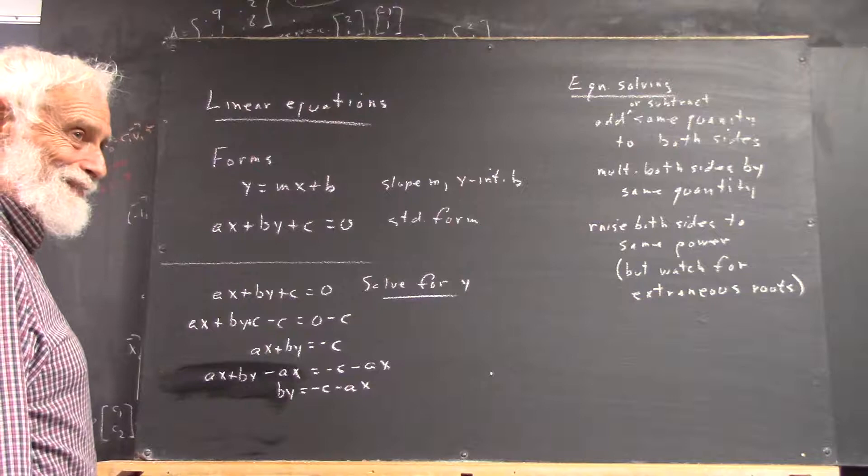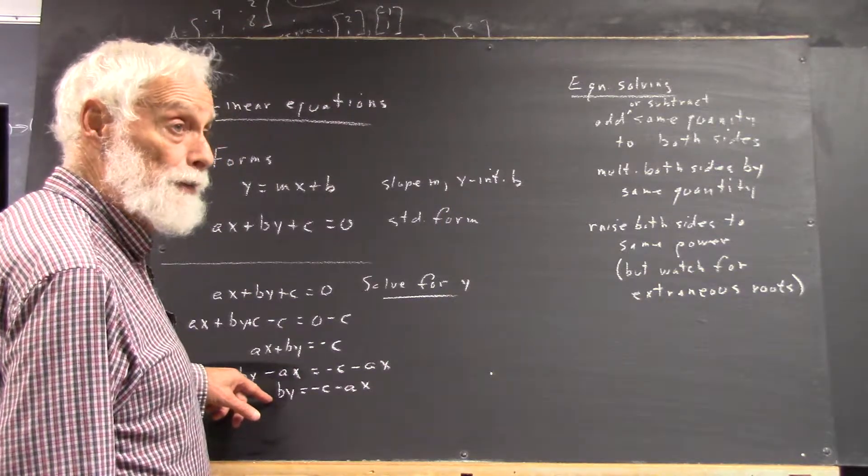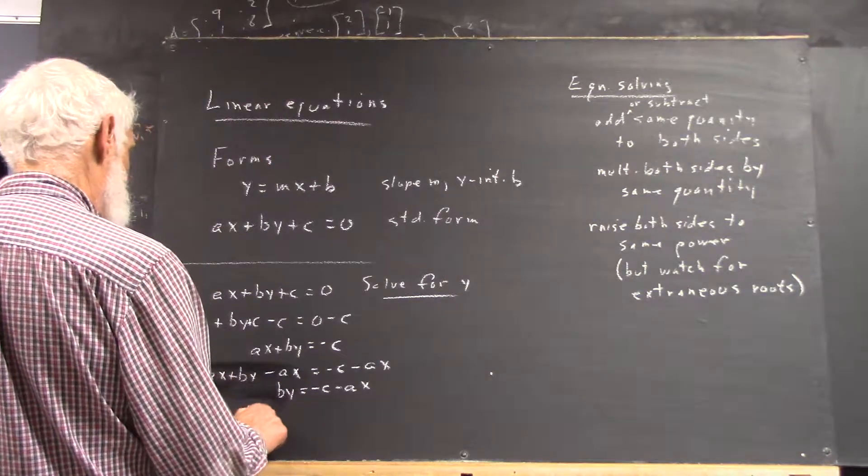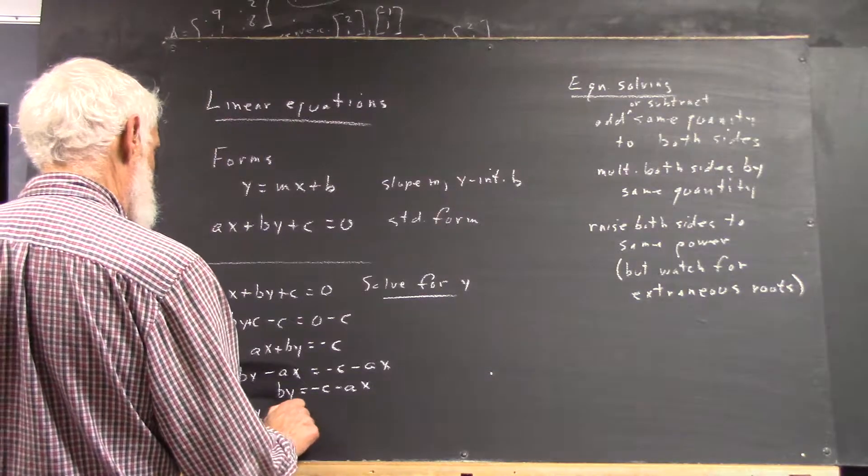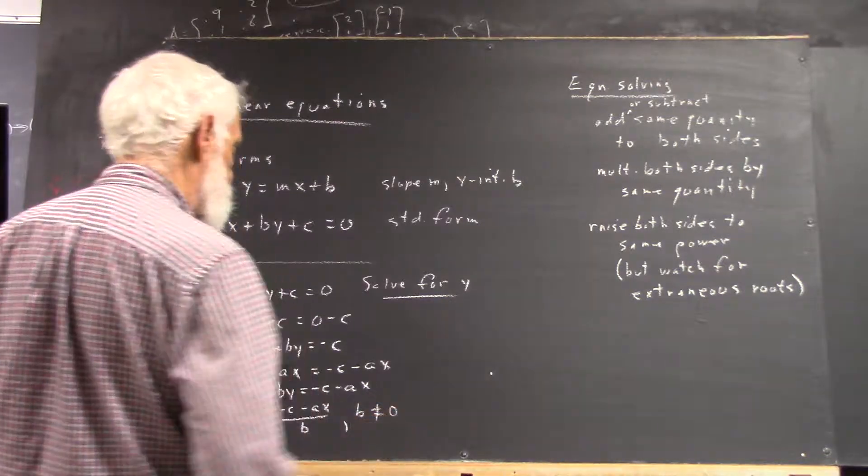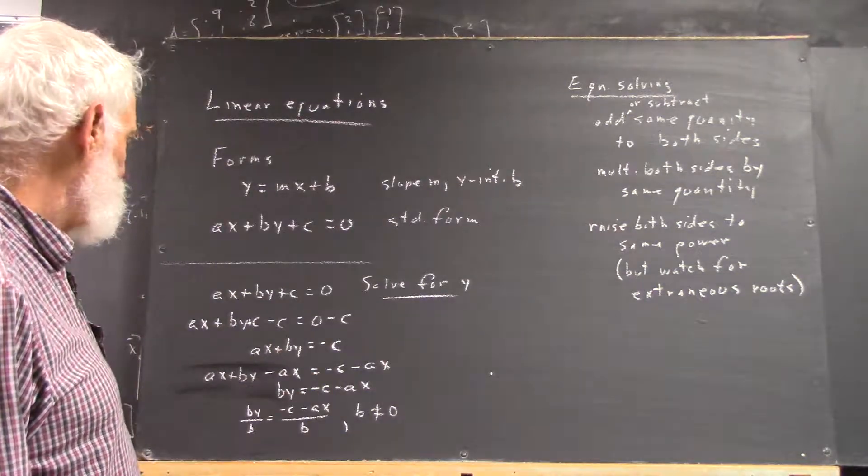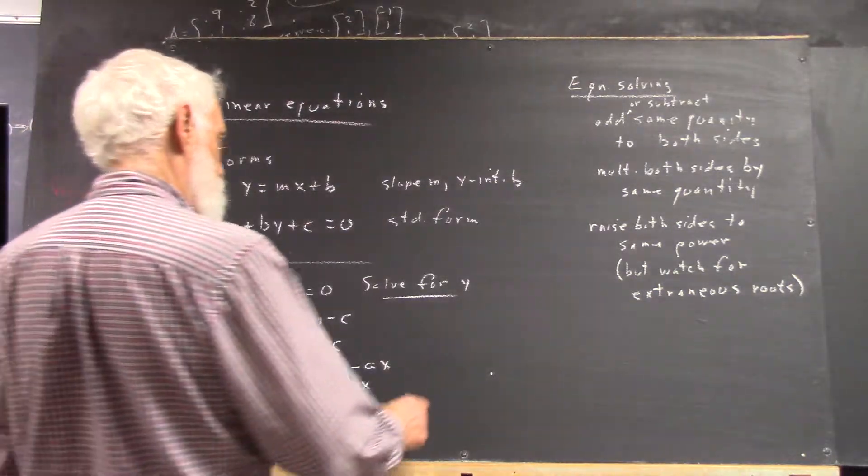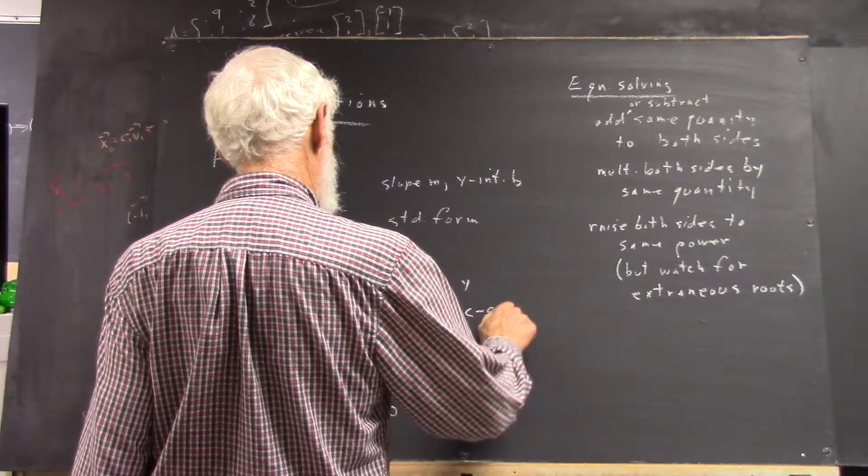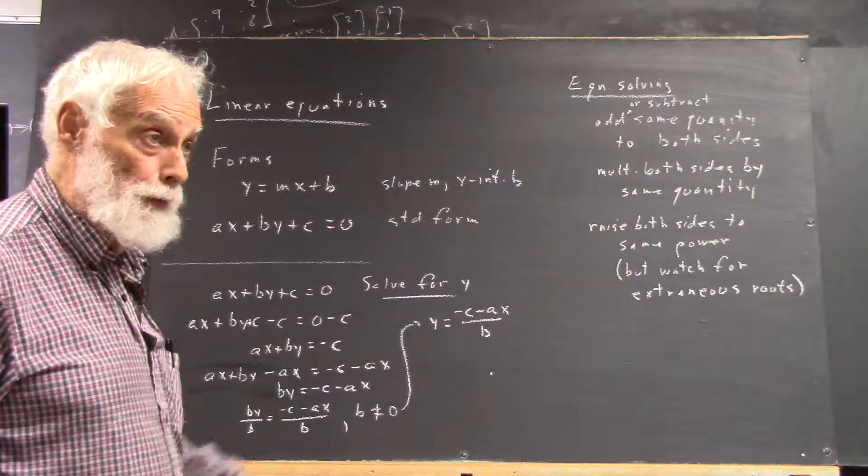Now, what do we do? Divide by B. Yeah, because when you divide, you've got to be sure that you divide by a non-zero quantity, because you can't divide by zero. Right. So, we write BY over B equals negative C minus AX over B, and then we say provided B isn't zero because, of course, if B is zero, you wouldn't have a Y to solve for it. Right. So, it's really sort of redundant in this case, but BY over B just Y and you end up with this, right? Right.